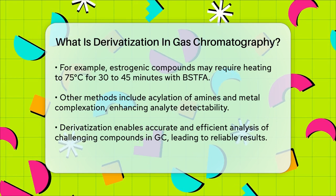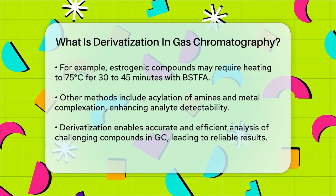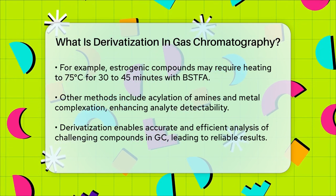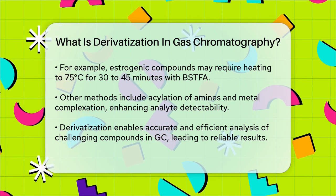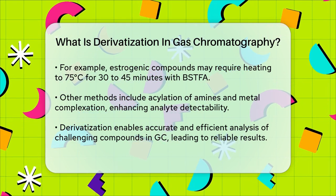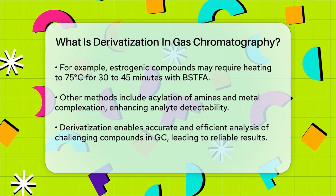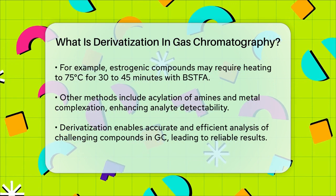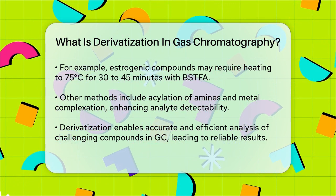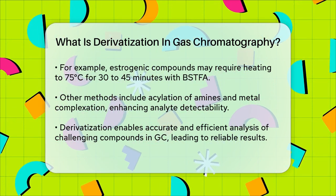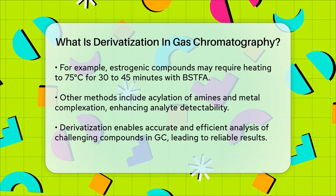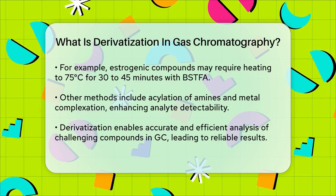In addition to silylation and esterification, other derivatization methods include acylation of amines and complexation of metals. These methods can also enhance the detectability of the analytes, especially when using techniques like electron capture detection (ECD) or mass spectrometry (MS).